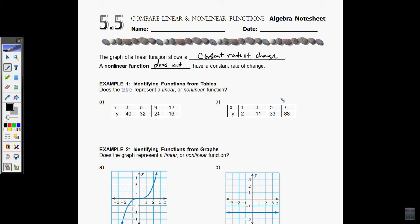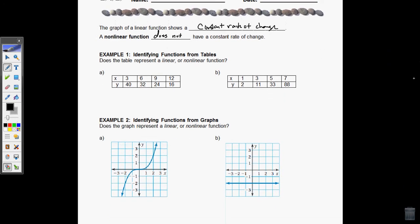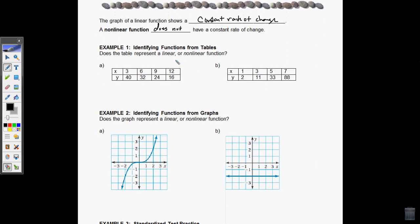So now we just have to look at how can we figure out if something has a constant rate of change when looking at different types of information, like a table or a graph. So when I'm looking at a table, how do I know if this has a constant rate of change? Well, the x values have to be increasing with the same amount of change as the y values.